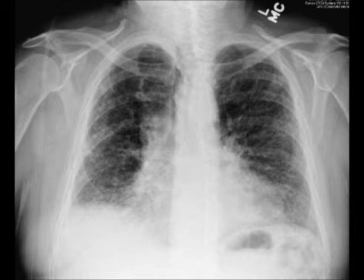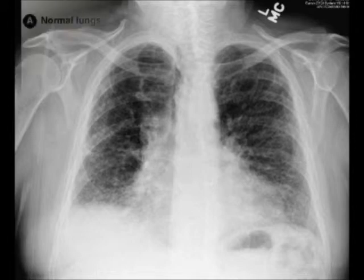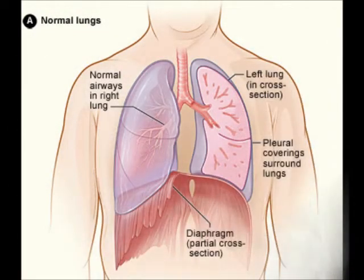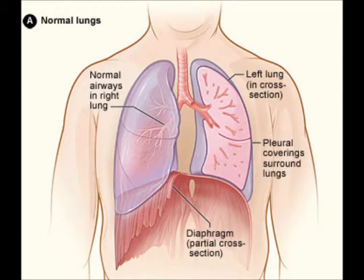In this procedure, the doctor makes a small cut through the chest wall and puts a thin, lighted tube called a thoracoscope into the chest between two ribs. Thoracoscopy allows the doctor to look inside the chest and obtain tissue samples.